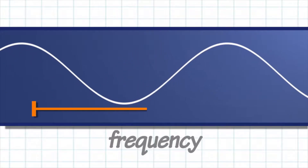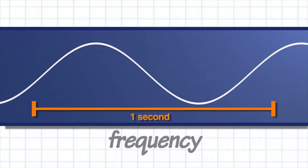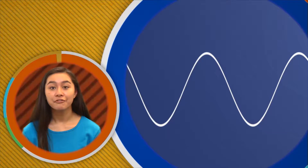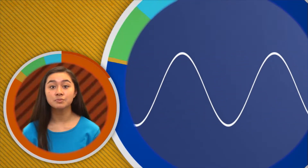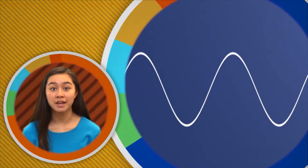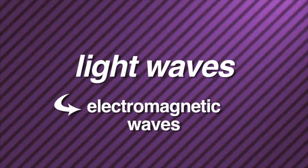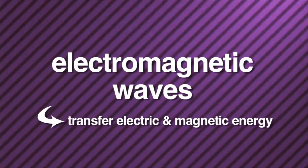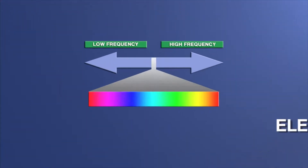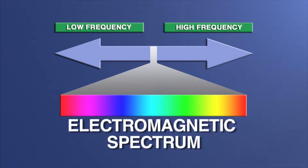Frequency is another property of light waves. This is a measurement of the number of waves that pass a certain point in a given time period. Frequency is very important because it determines where a light wave appears on the electromagnetic spectrum. Light waves are a special kind of wave called electromagnetic waves. Electromagnetic waves transfer electric and magnetic energy, and those waves are part of the electromagnetic spectrum — the name for the range of electromagnetic waves in order of frequency.